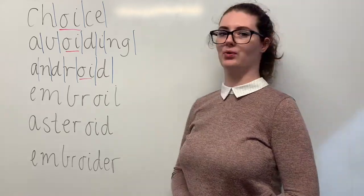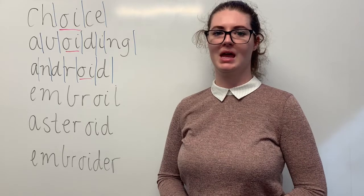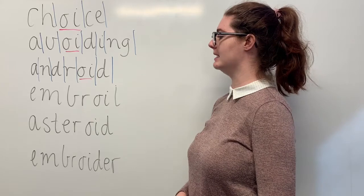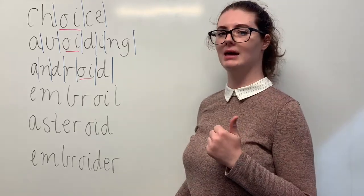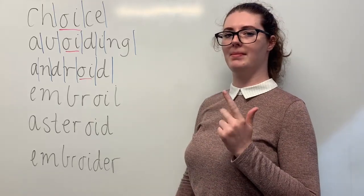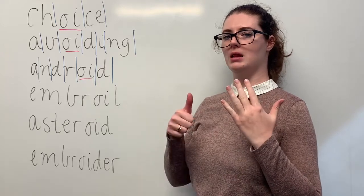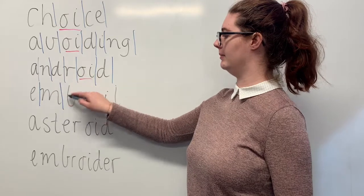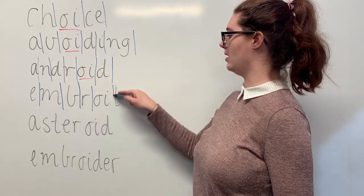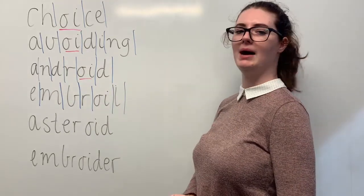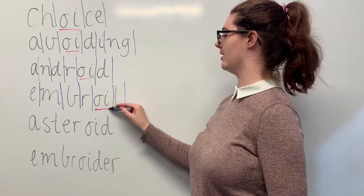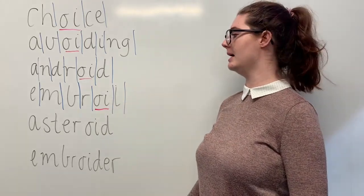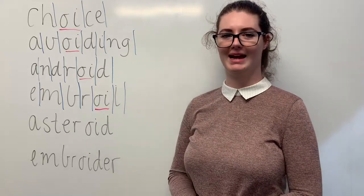Our next word is embroiled. Say embroiled. The two companies were embroiled in a lawsuit together. The sounds in embroiled are, together, e, m, b, r, oi, l. The letters in embroiled are e, m, b, r, o, i, l. The part we need to remember is the oi digraph making the oi sound. Can you teach it to me? Embroiled: e, m, b, r, o, i, l.